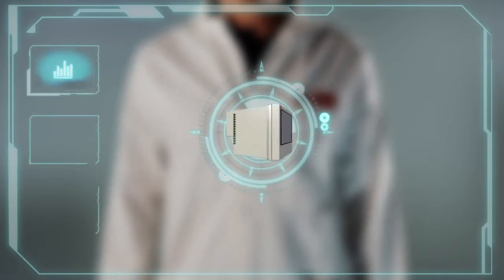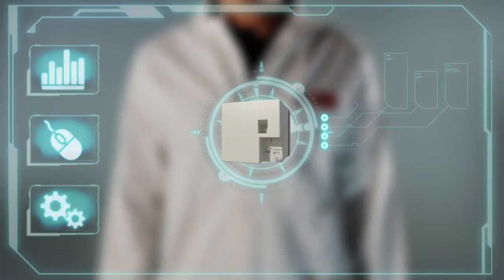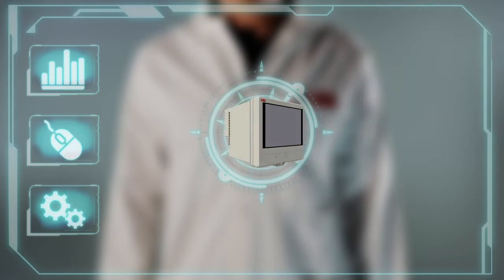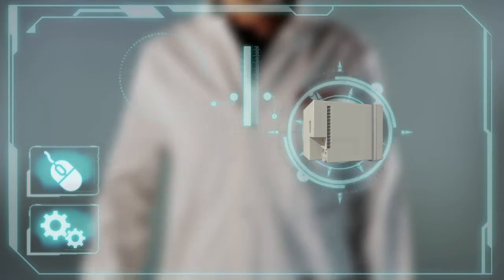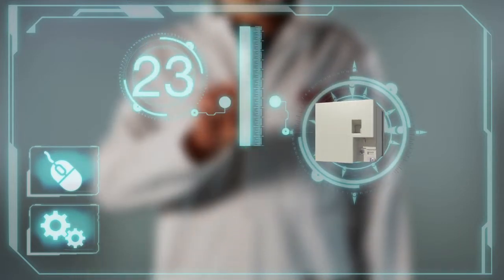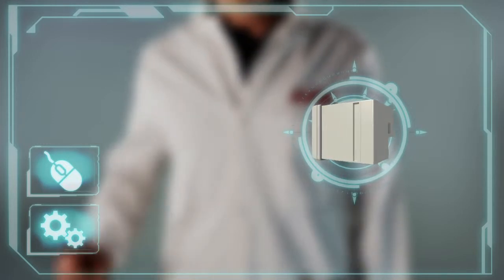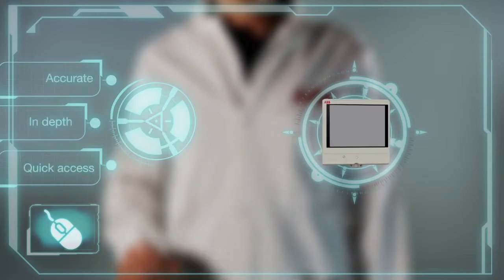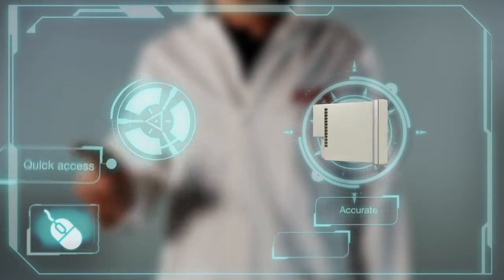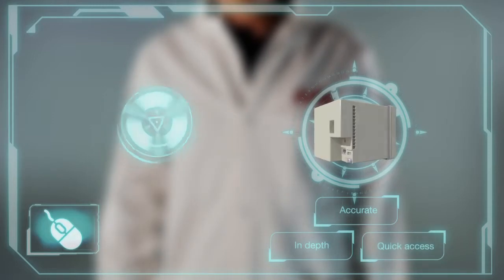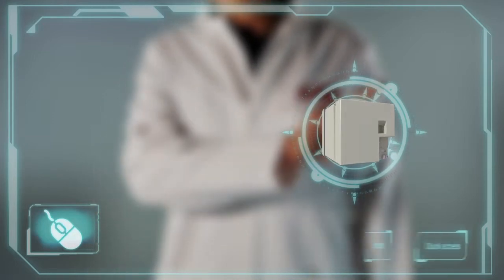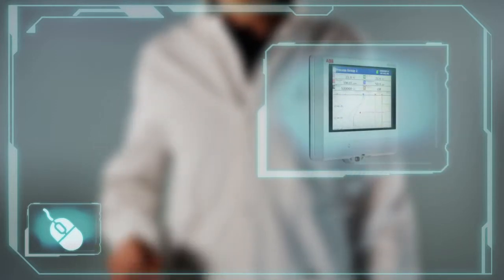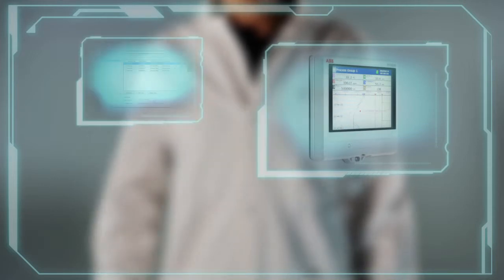ABB's new RVG200 paperless recorder truly puts you in touch with your process like never before. The RVG200 is capable of accepting 24 process signals, providing accurate in-depth process data that can be quickly accessed by the advanced touchscreen display or archived for further analysis.